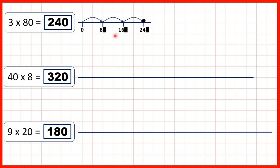You can see that counting in steps of 80 is just like counting in steps of 8, but with a zero as our ones digit. Then we had 40 times 8. Now we could show 40 jumps of 8 on our number line, but that would take a very long time. So instead, let's show 8 jumps of 40, because with multiplication, order doesn't matter.